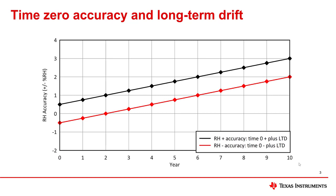Time zero accuracy refers to the relative humidity accuracy after calibration at a TI factory before the device manufacturer ships out the humidity sensor. Positive and negative accuracy curves can be seen here, with time zero accuracy determined during the production test process.